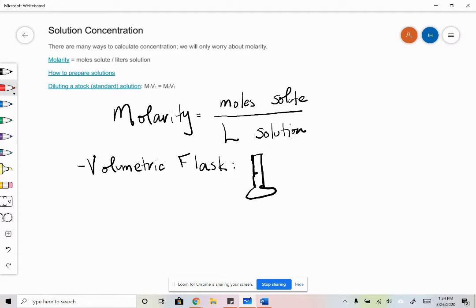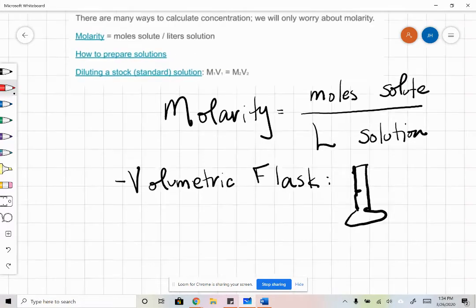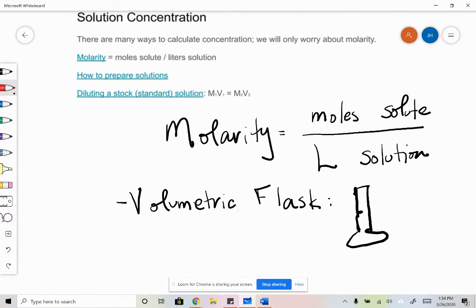So in order to prepare a solution, you'd put some amount of your solute in the bottom of the flask, and then fill it up to the line with your solvent, and you would make sure that it's all dissolved before you fill the flask completely.